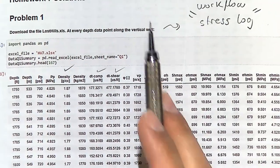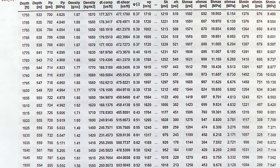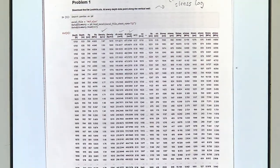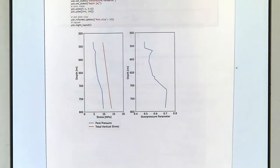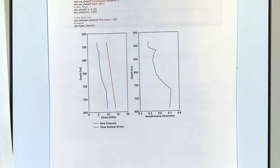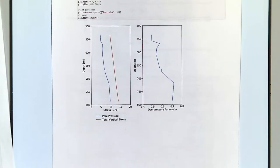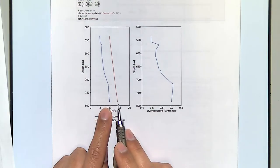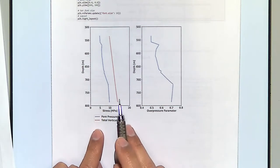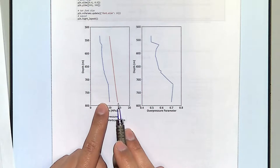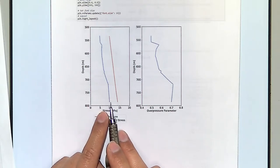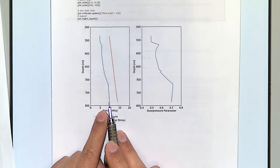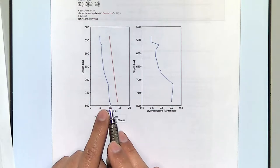Let's look at how the solution works. The first thing you have to do is load the data. There you have information on what the pore pressure is, and you know how to calculate the vertical stress. The total vertical stress is this line here, and the pore pressure is this other line.